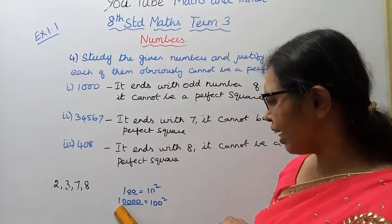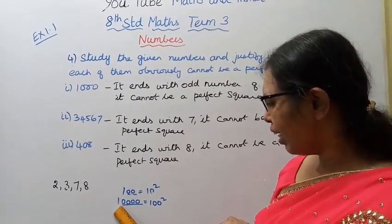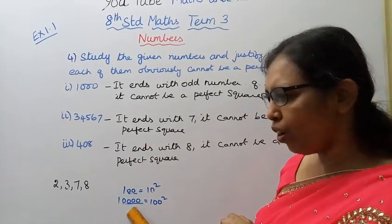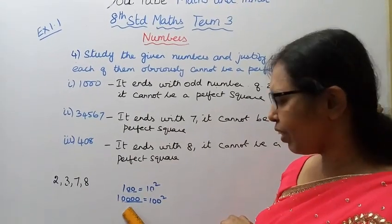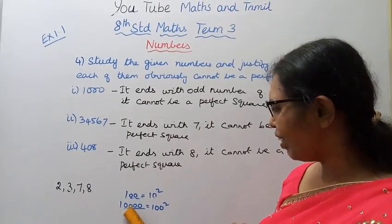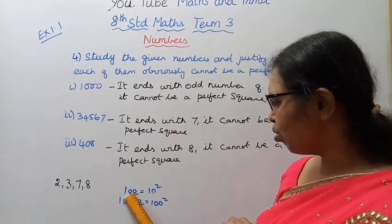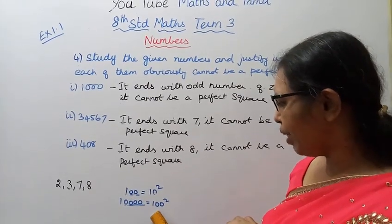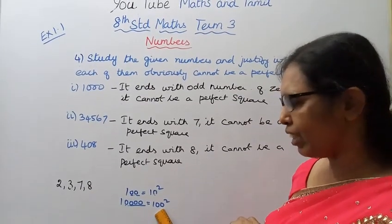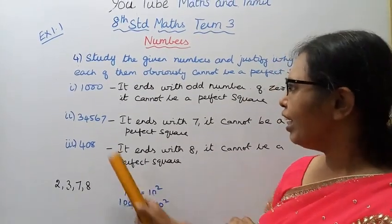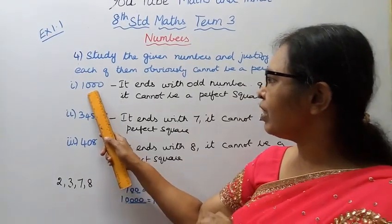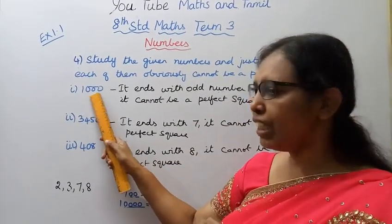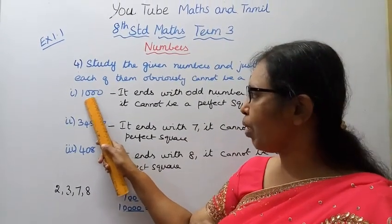Take 10,000 — it has four zeros, which is an even number. So it can be a perfect square. In fact, 10,000 is 100 squared, so it is a perfect square.